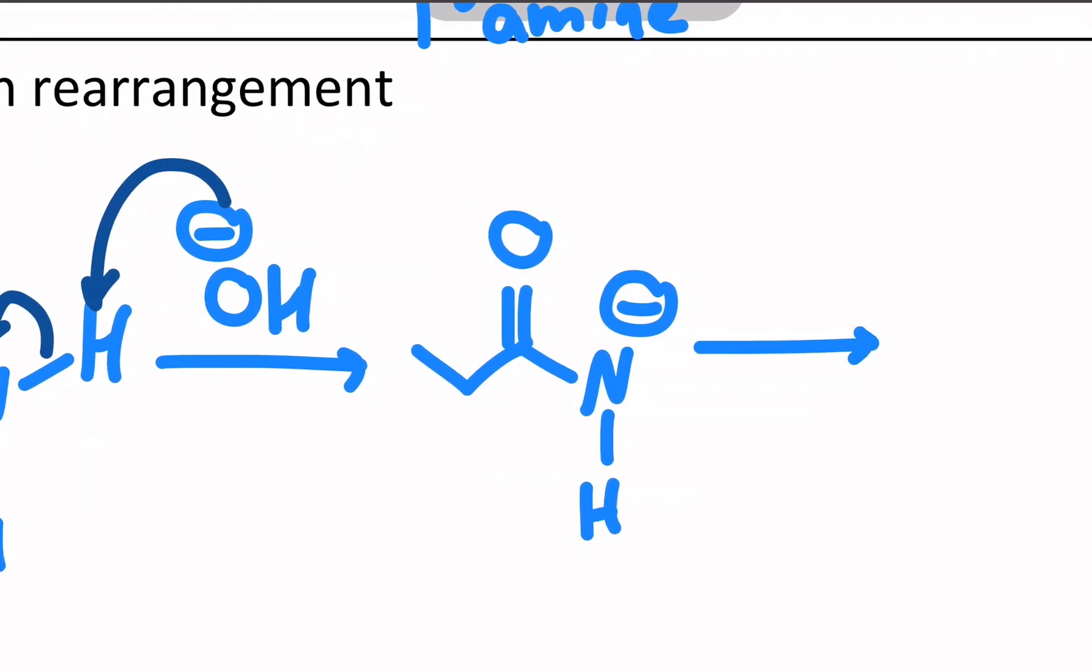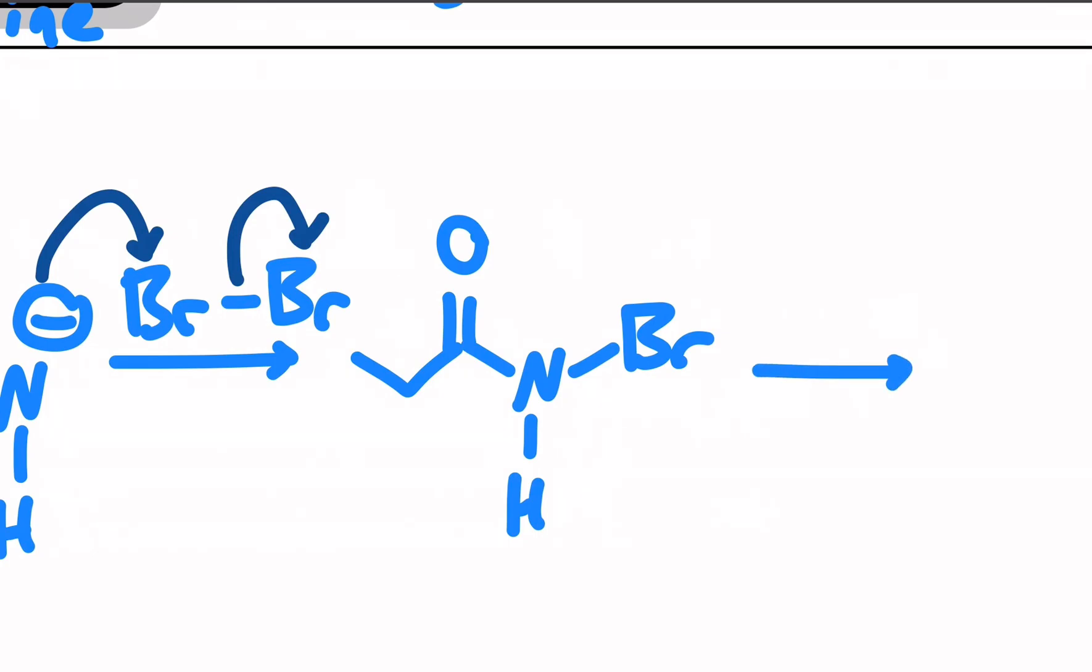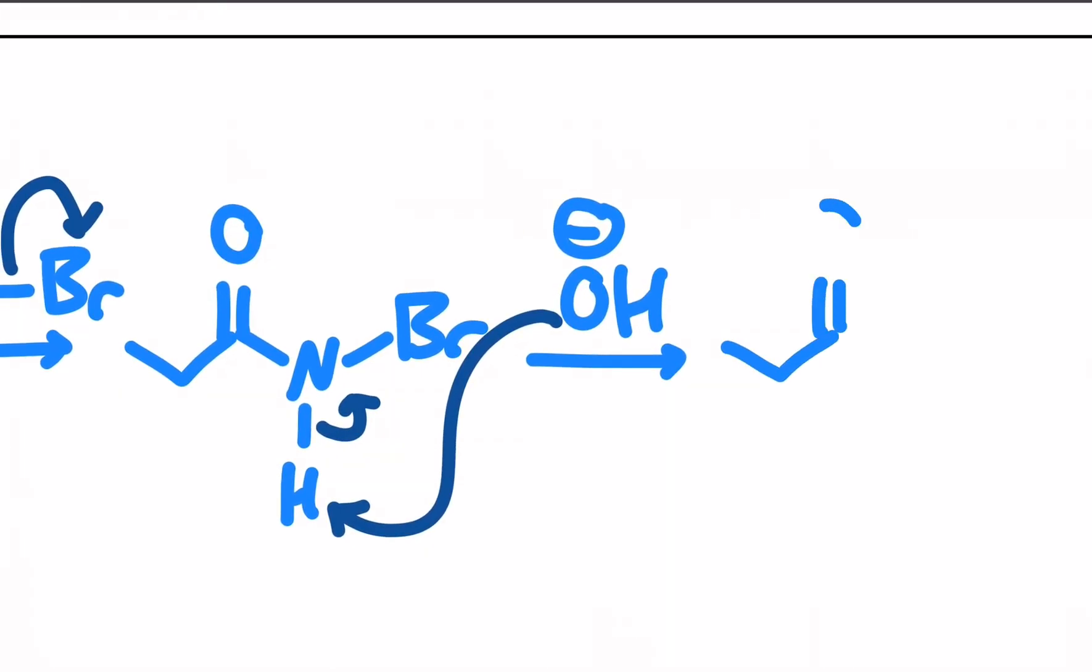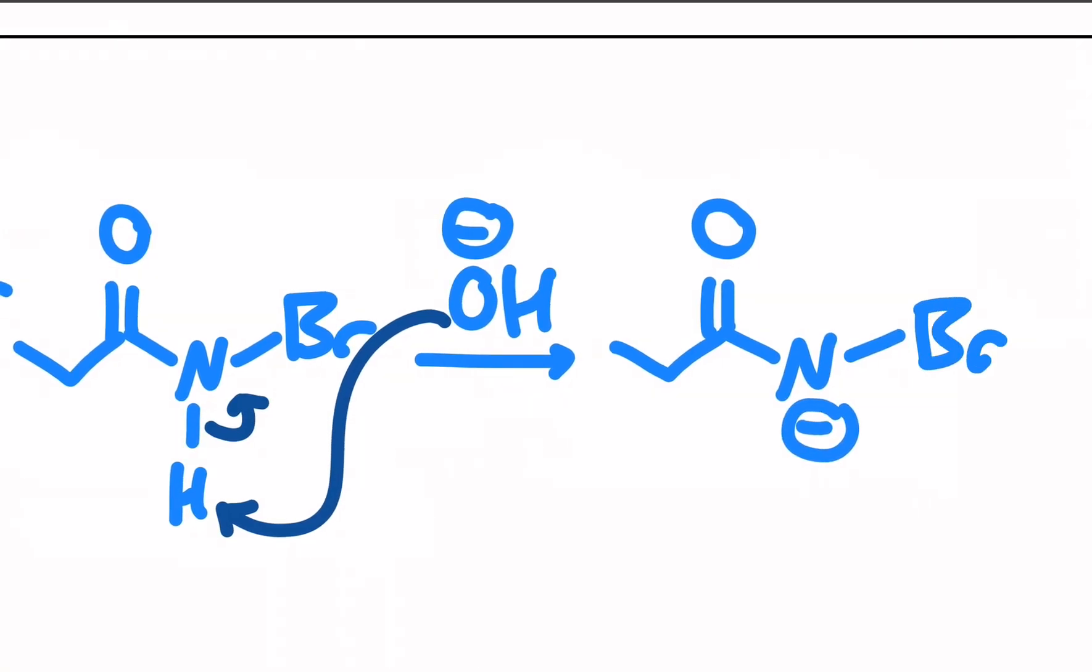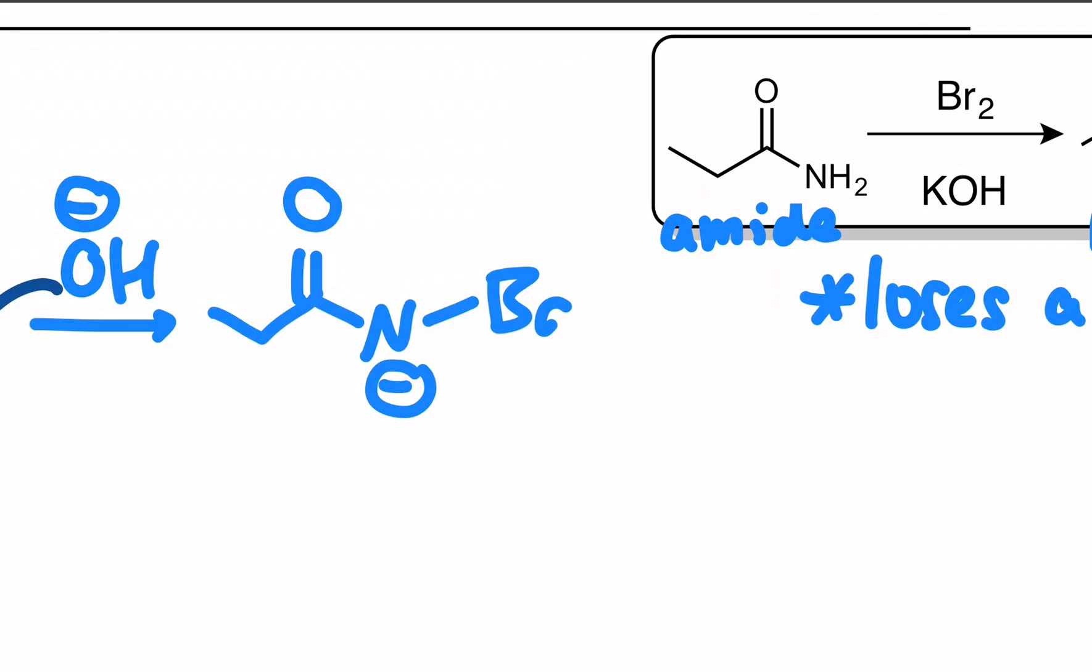And this amide anion sees bromine. And you get a substitution of a bromine on the nitrogen. So now we have what's called an N-bromo amide. And this is done in excess base. History will repeat itself. So hydroxide will come along and take away that second hydrogen that's on the amide to give you another nitrogen anion with the bromine still attached. Now you might think, oh, this keeps going and I put a second bromine on that nitrogen. But not so.